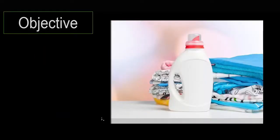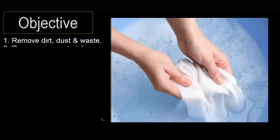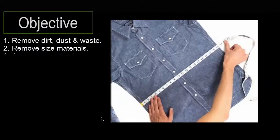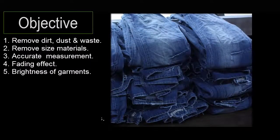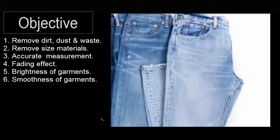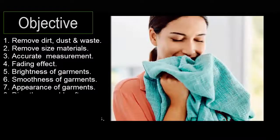The objects of garments washing include: to remove dirt, dust, and unwashed materials from garments; to remove size material from garments; to allow sinkage to occur so accurate measurements can be found by customers; and to enhance the fading effect on garments and increase brightness.